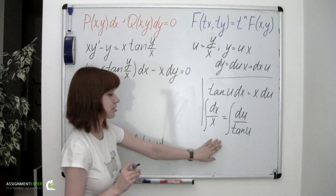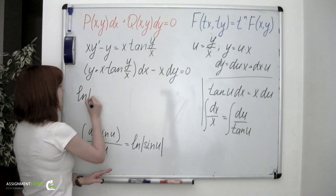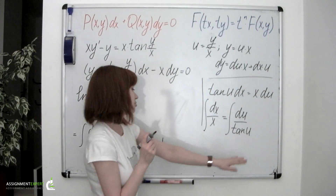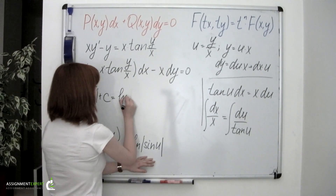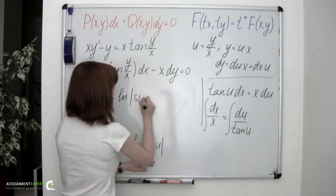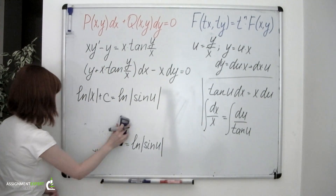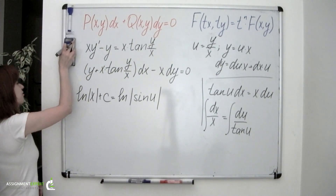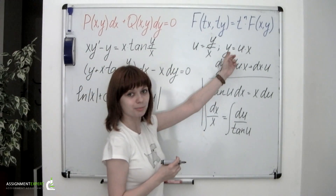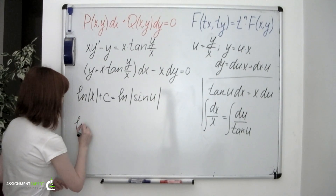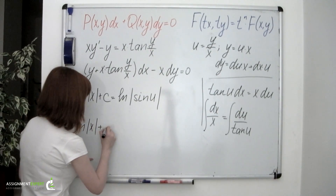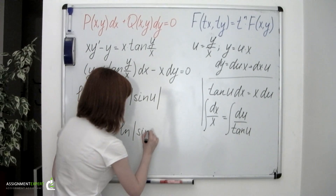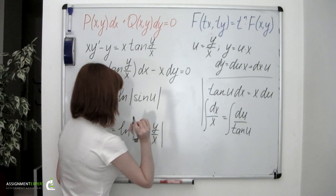So we have the result of the integral on the left, which is ln of the absolute value of x plus the constant, equal to the result of the integral on the right, which is the natural logarithm of the absolute value of sine of u. And finally, step number 5, where we return to the y variable. The final answer is: ln of the absolute value of x plus C equals ln of the absolute value of sine of y over x. And that's it.